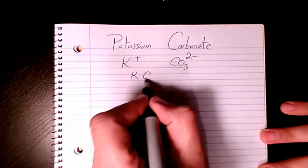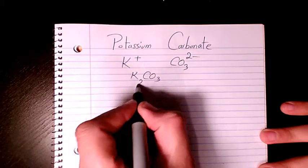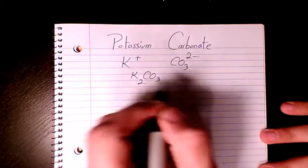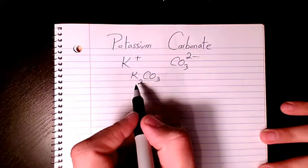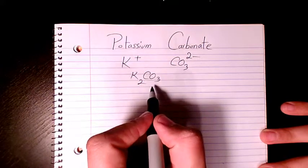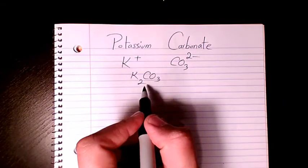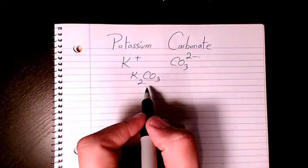So when I want to write the chemical formula, K2CO3, 2 is gonna sit here and one is gonna sit here, so we don't write one. That's why it's gonna be K2CO3. That's the molecular formula.